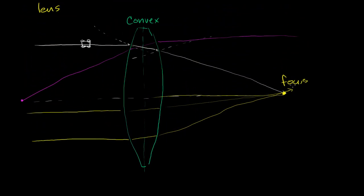One thing we're going to assume while dealing with lenses is the thin lens assumption — a simplifying assumption. There is a difference in the distance light travels depending on where it passes through the lens: less distance near the center than near the edges. In introductory physics we're going to ignore that difference, because it would lead to differences in how light is refracted and transmitted. So we make the thin lens assumption and ignore those differences.